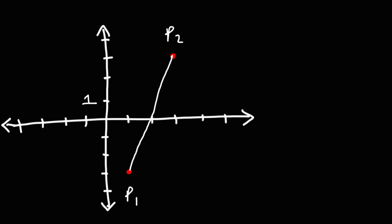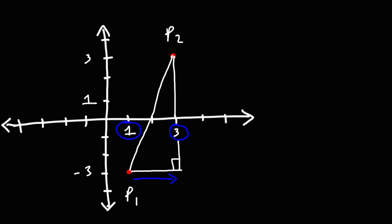First, we need to identify the points on the graph. P1 is located at an x value of 1 and a y value of negative 3. P2 is located at an x value of 3 and a y value of 3. Next, let's turn this into a triangle so we can calculate the rise and the run. The run goes from 1 to 3, so we're traveling two units along the x-axis.